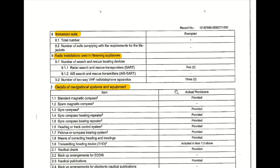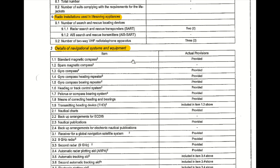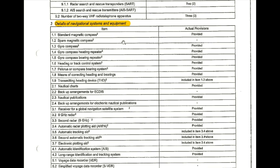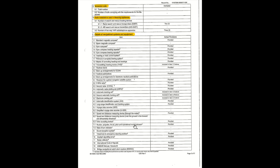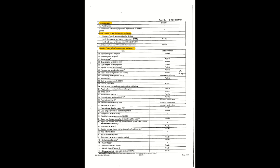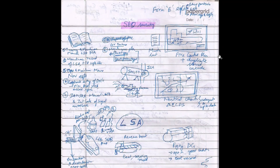The third point is the details of the navigation system and equipment. Here, a lot of navigation systems and equipment are listed, so you try to recollect and remember as many points as possible. You talk about gyro, heading or track control systems, nautical charts, backup ECDIS, nautical publications, the 9 GHz or 3 GHz radars, and so on.